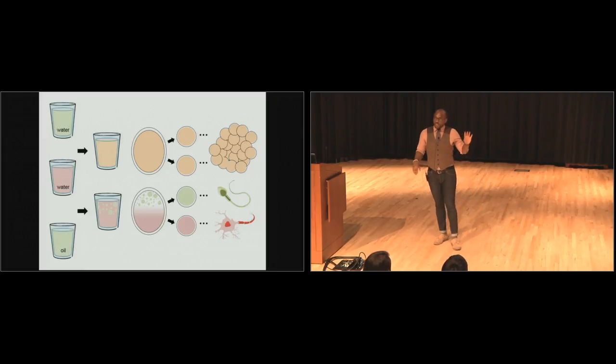So our cells face a very similar problem. And that's because we're all complex organisms. And that means we have all these different kinds of cells, neurons, muscle cells, skin cells, eggs, sperm.